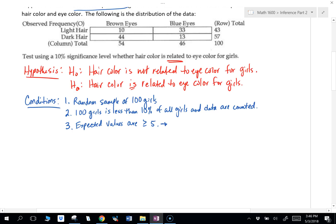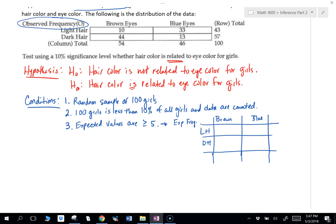Okay. So we're going to basically copy down that chart. Notice this is observed frequencies. So we're going to go and say expected frequencies. And we're going to copy down this chart. Brown, blue, light hair, dark hair. Just don't copy down the values. Okay.